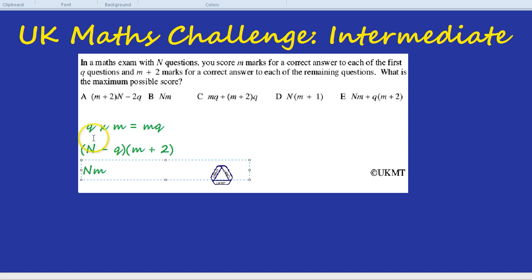Then we have outside N times 2 which is 2N. Then we have inside minus Q times M. Don't forget the minus. So it's minus Q times M which would be minus MQ.